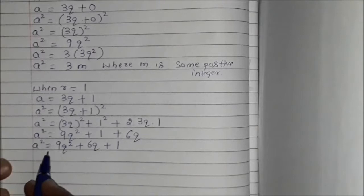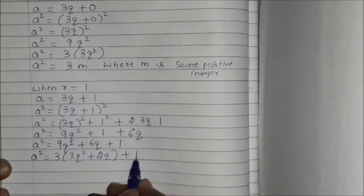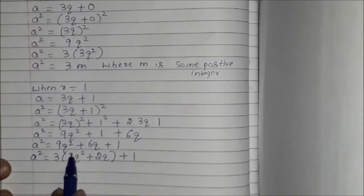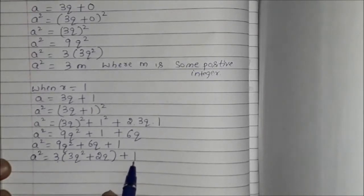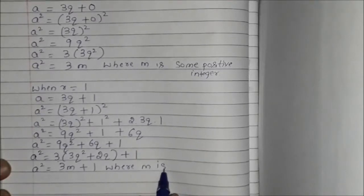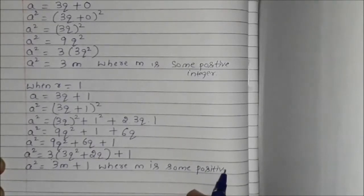So A squared is equal to 9Q² plus 6Q plus 1. Taking 3 as common from the first two terms gives A squared equal to 3(3Q² plus 2Q) plus 1. If we take the whole term 3Q² plus 2Q as m, then A squared is equal to 3m plus 1, where m is some positive integer.